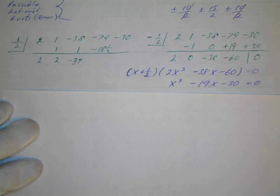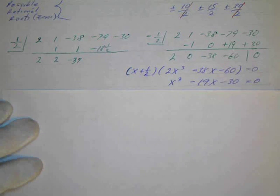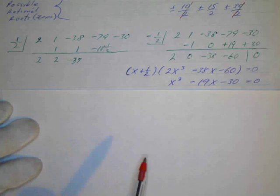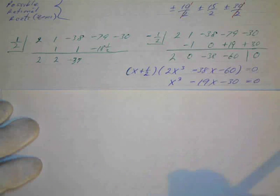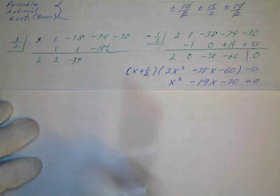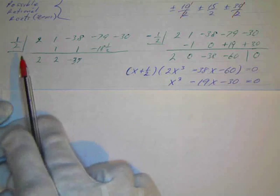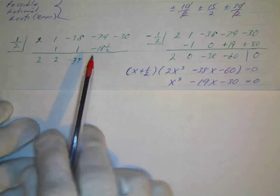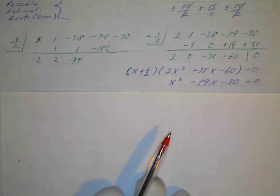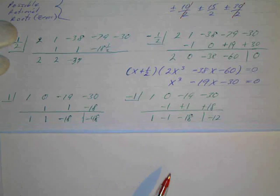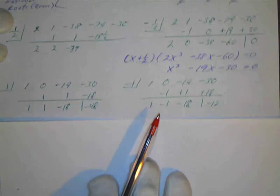So now I'm going to try to find my other rational root so I can reduce this down to a quadratic and solve it by any of the methods I can use with a quadratic. Since we have a fraction, we're probably done with the fractions because we only have a 2 in front.